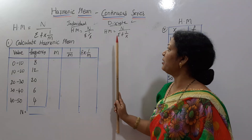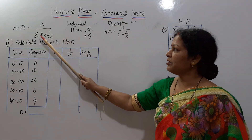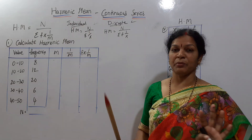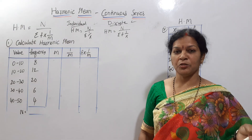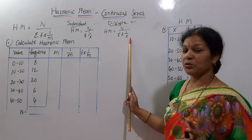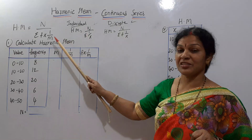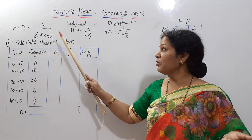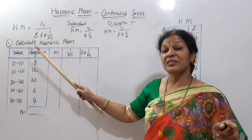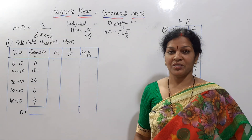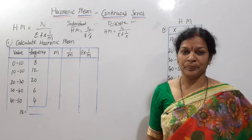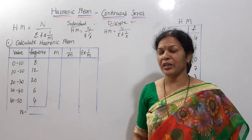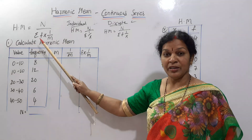In the continuous series, we have n by sigma f into 1 by m. Here, instead of x values as in the discrete series, we use m, where m represents the mid value of the class interval. So the formula is harmonic mean equals n by sigma f into 1 by m.